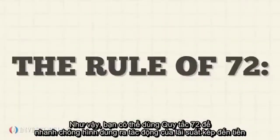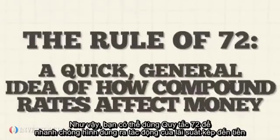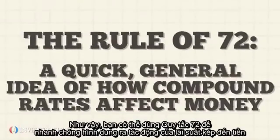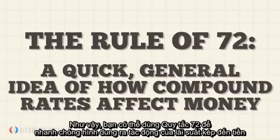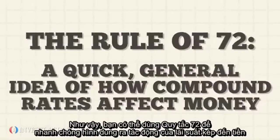The rule of 72 is most useful for providing a quick, general idea of how compound rates affect money.